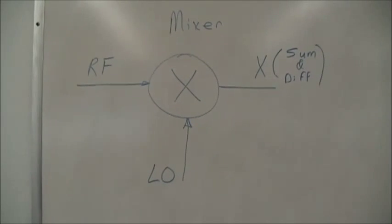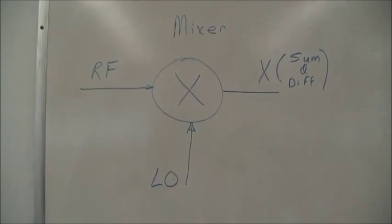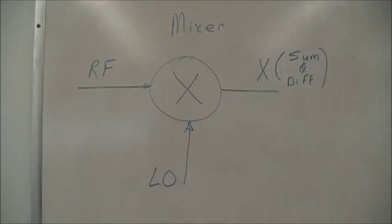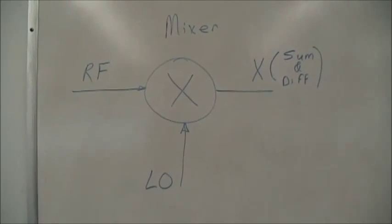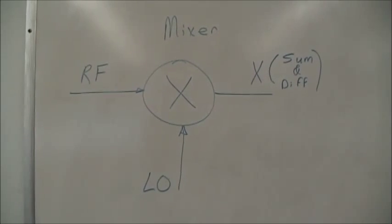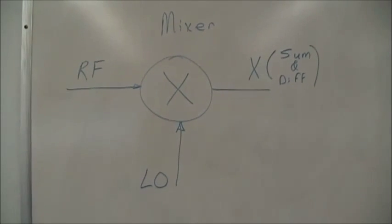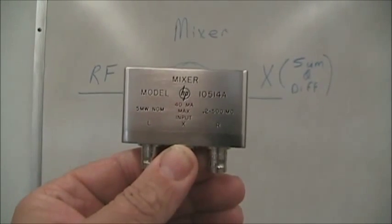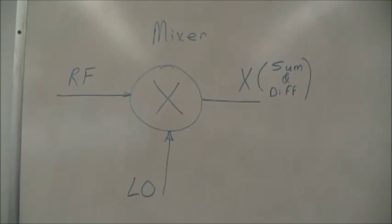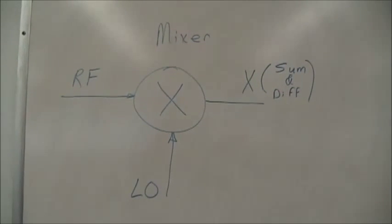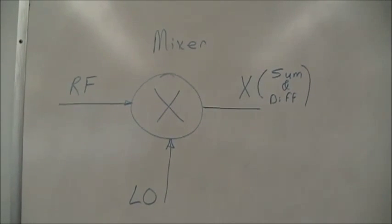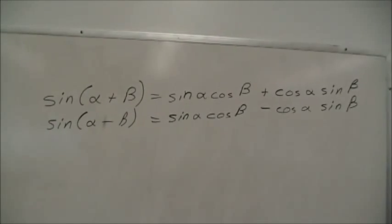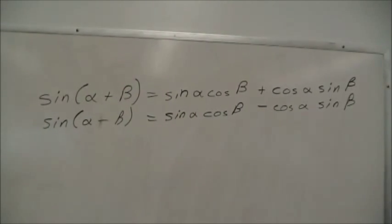This laboratory is all about the RF mixer. In symbol, it looks like a diagram with two inputs and one output. The physical device looks like this, and mathematically the mixer performs the multiplication operation.